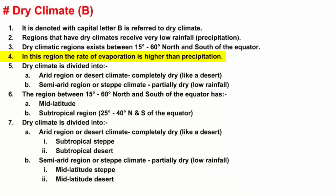However, in dry climatic regions, the annual evaporation rate is much higher than precipitation. That means the sun's energy soaks up all the moisture from the ground, but on the flip side, rainfall is very low. Keep in mind, precipitation is low but not zero.